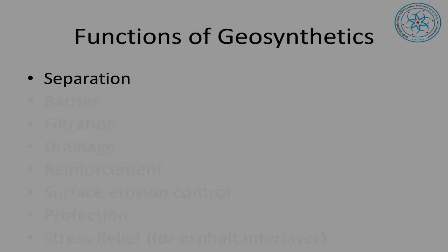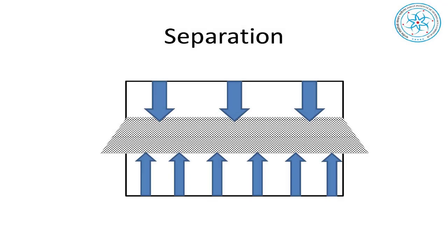The first function is separation — we are trying to separate two dissimilar materials. For example, a pavement subgrade which is soft material, then a geosynthetic layer, and then aggregates. We are trying to separate these two things. If the CBR value is very low — say 0.5 or 0.75 — you cannot even walk on it. If you dump aggregate on that, it will sink in. So we need a separator.